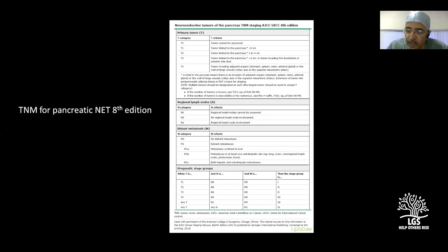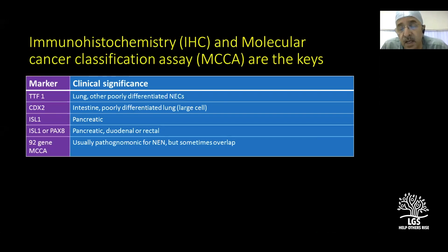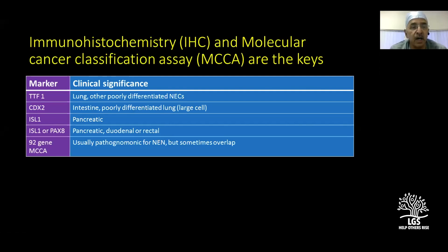If you have a tumor in the liver and don't know its origin, immunohistochemistry markers can help. ISL1 or PAX8 suggests pancreatic origin, while TTF1 suggests lung origin. Further IHC and molecular cancer classification assays can indicate where the primary is likely to be, though this is not foolproof.